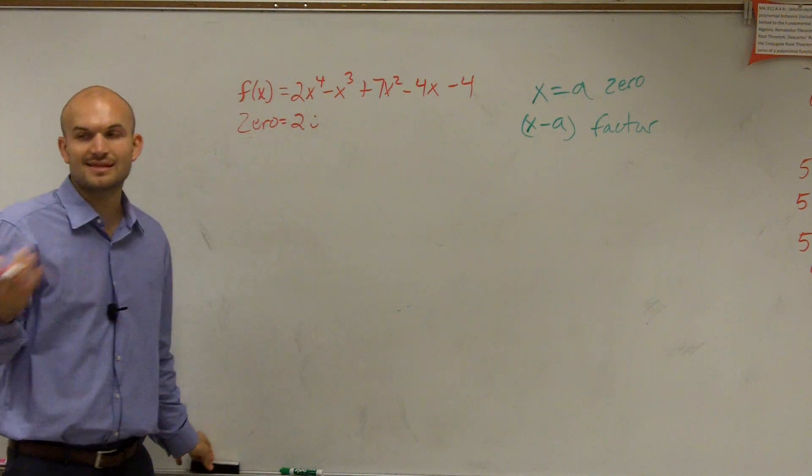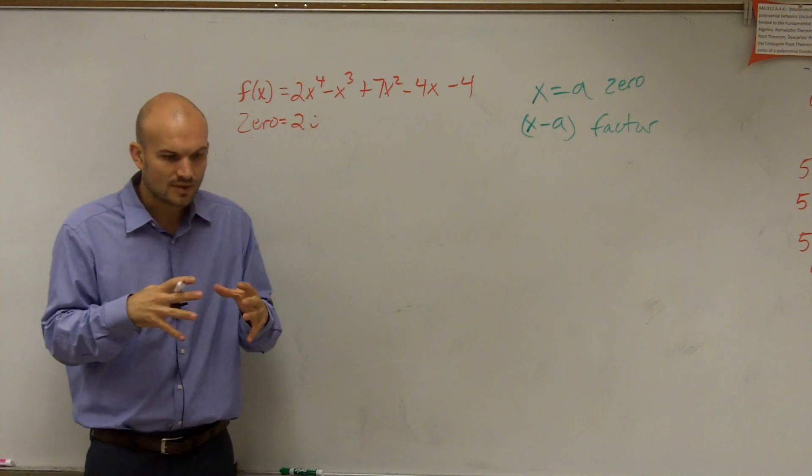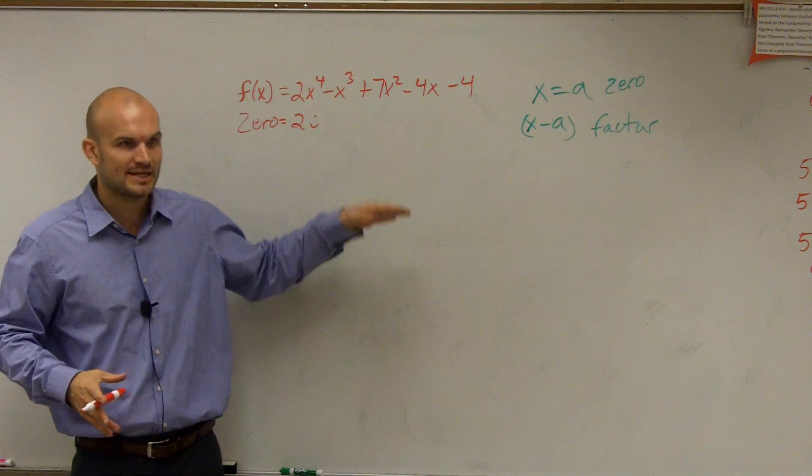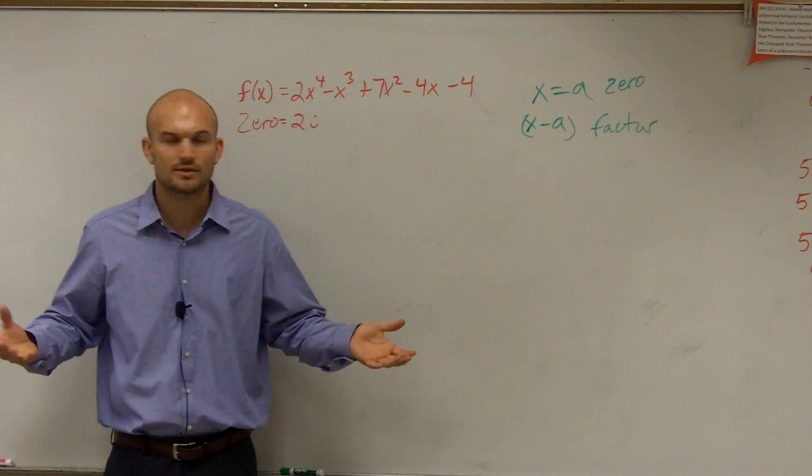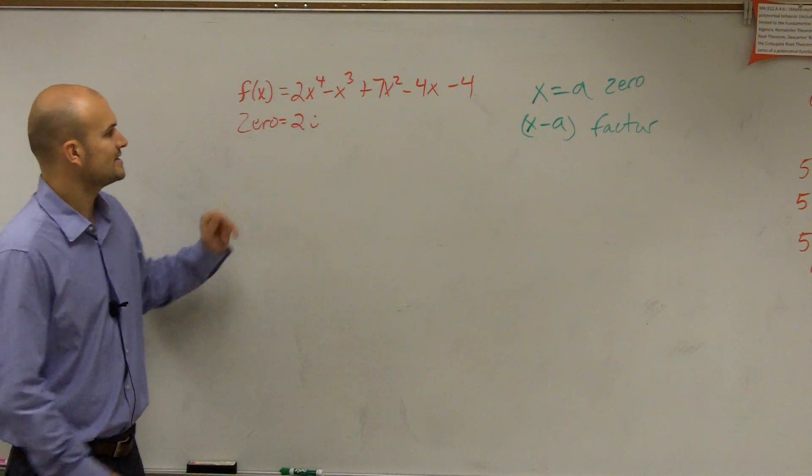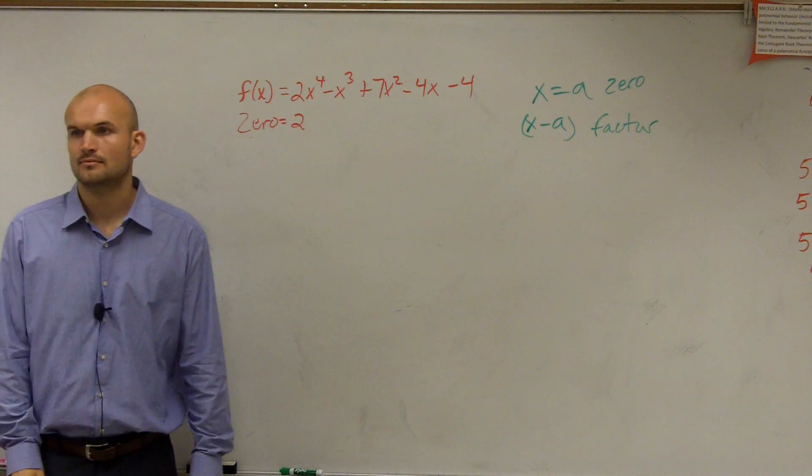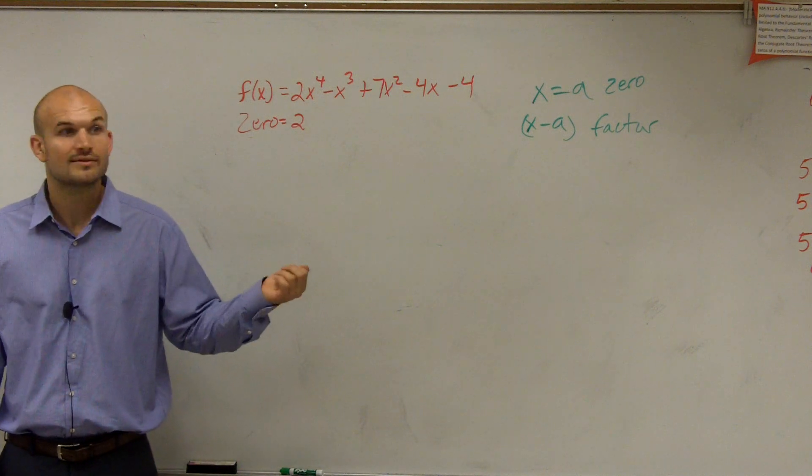However, we've usually done just synthetic division because when doing synthetic division, we get the resulting factor, which we kept on factoring down until we got all the linear factors. So ladies and gentlemen, if I had 2, if I said the zero was 2, what would you do?